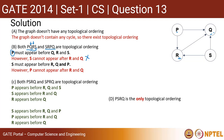Now let us check the second ordering SRPQ. S must appear before R, Q, and P. S must definitely be before R and Q. There is no specific ordering between P and S, so we can write P after S — that is okay. But the problem is P cannot appear after R and Q, because there are edges from P to R and P to Q, so P should be before R and Q. In SRPQ, P is given after R, which is not correct. So this is also a wrong option.